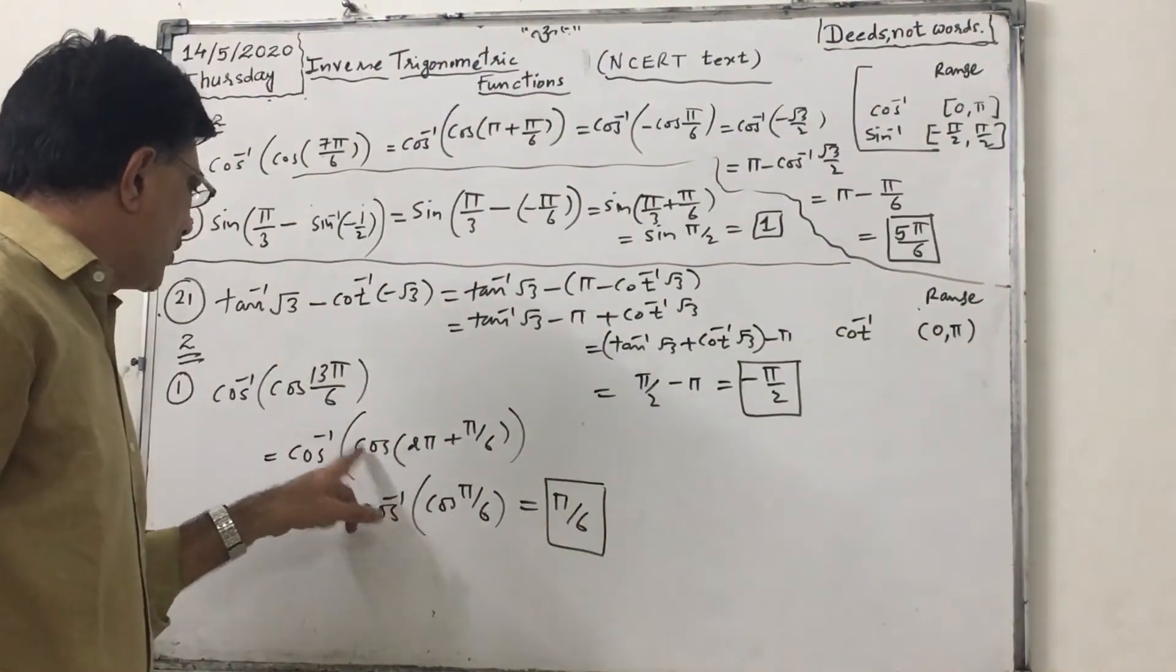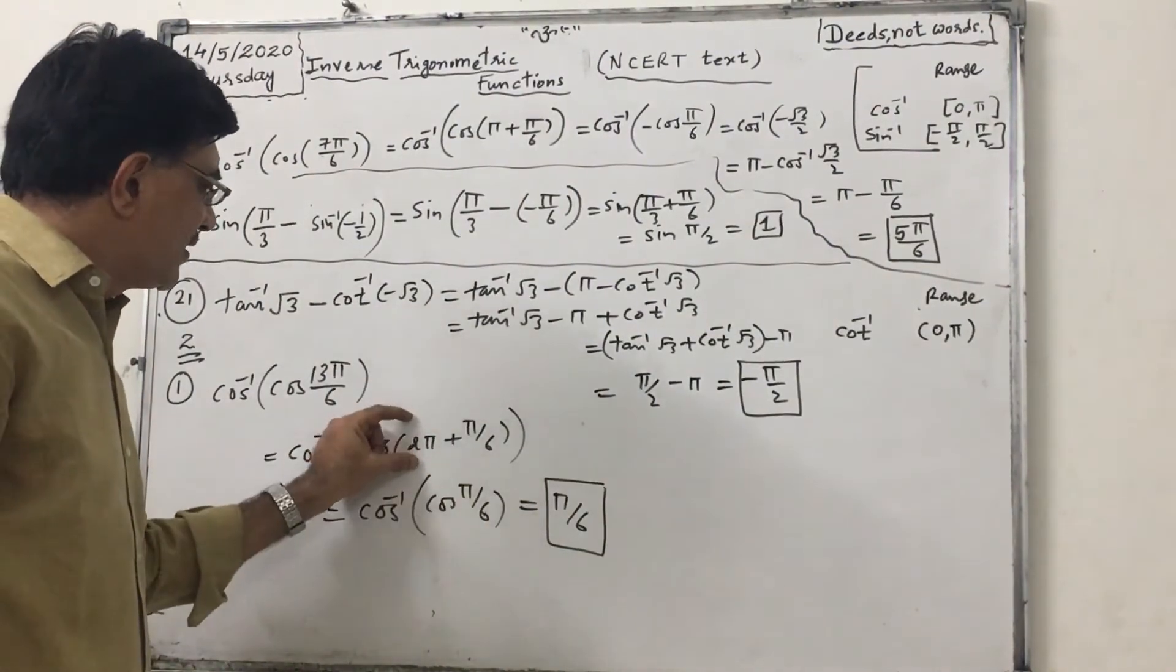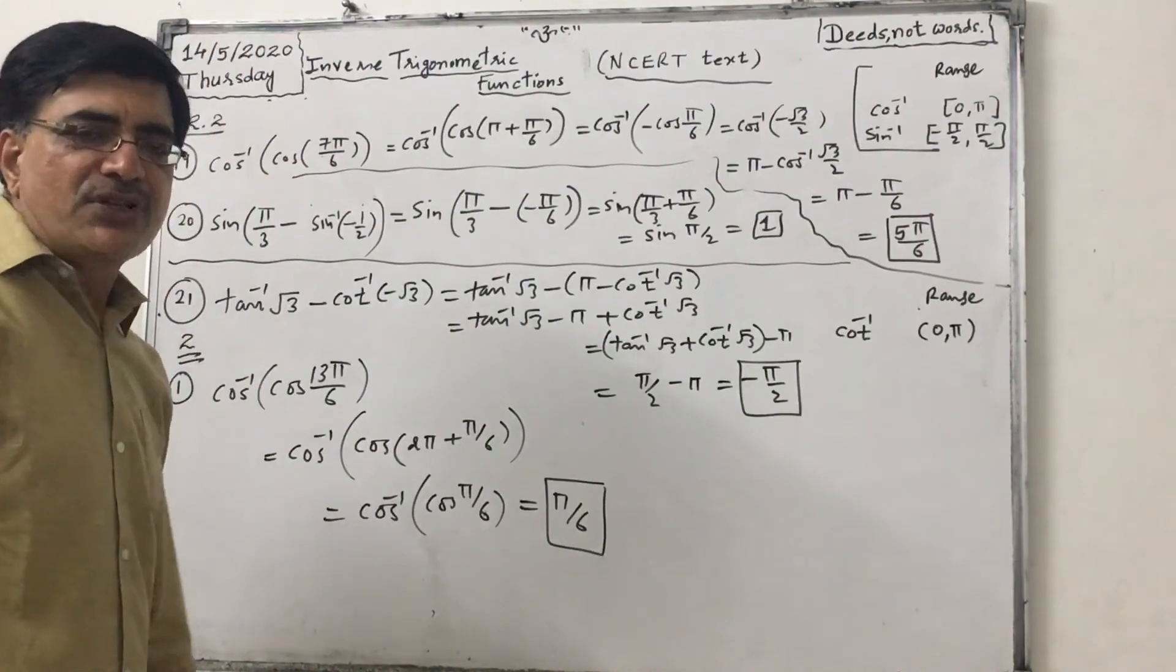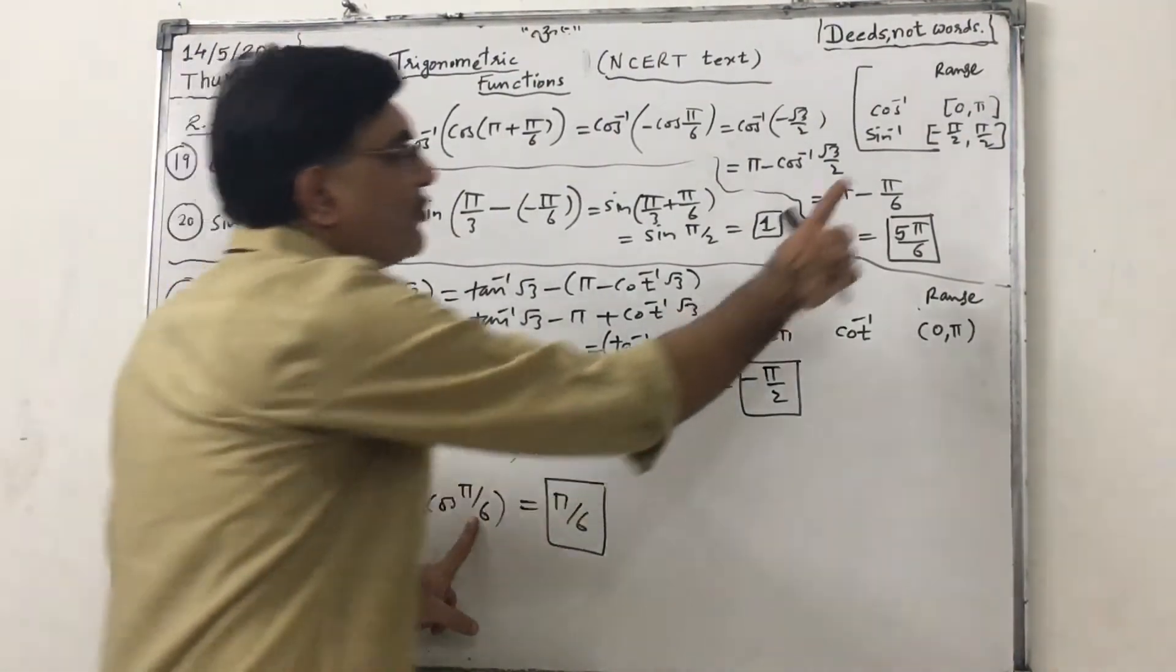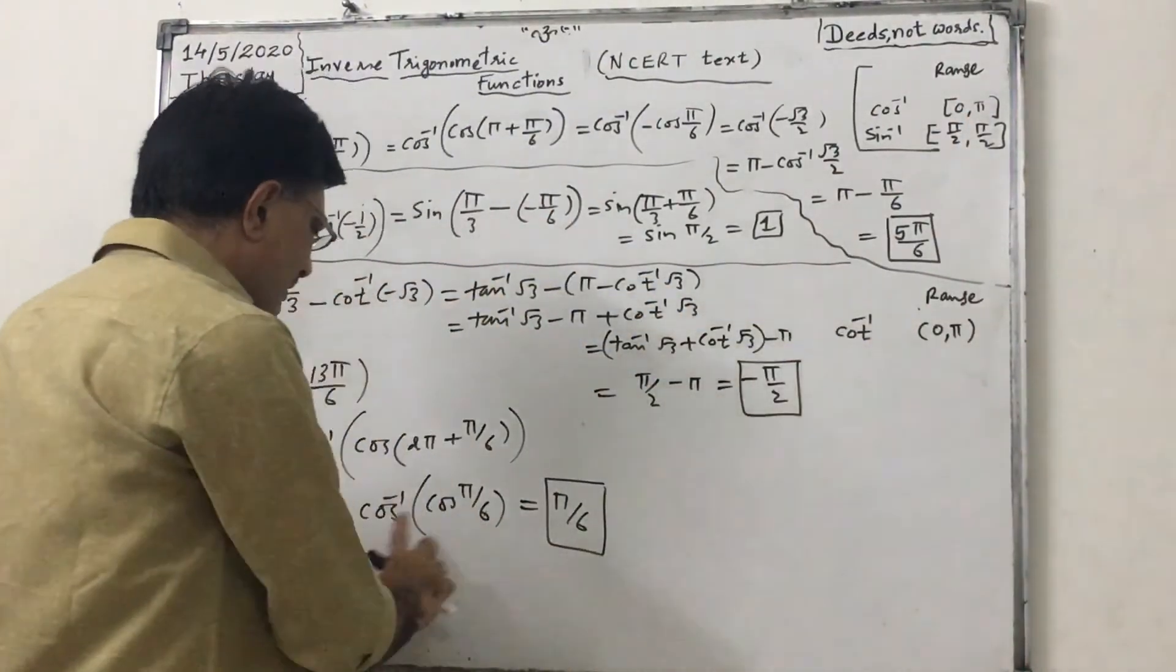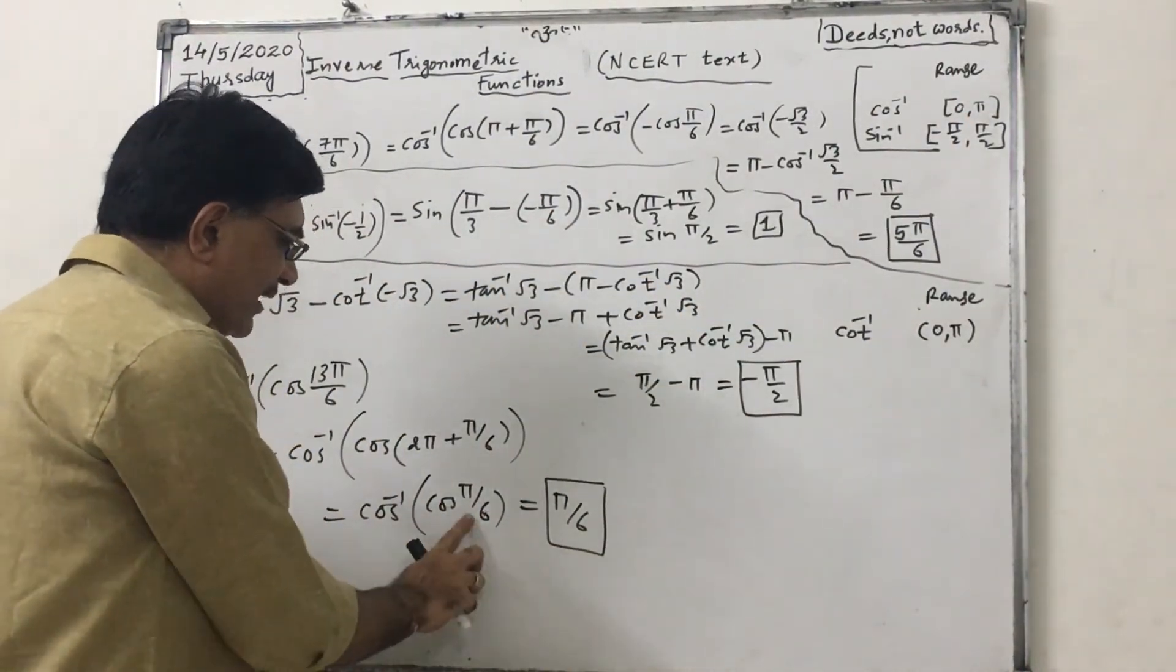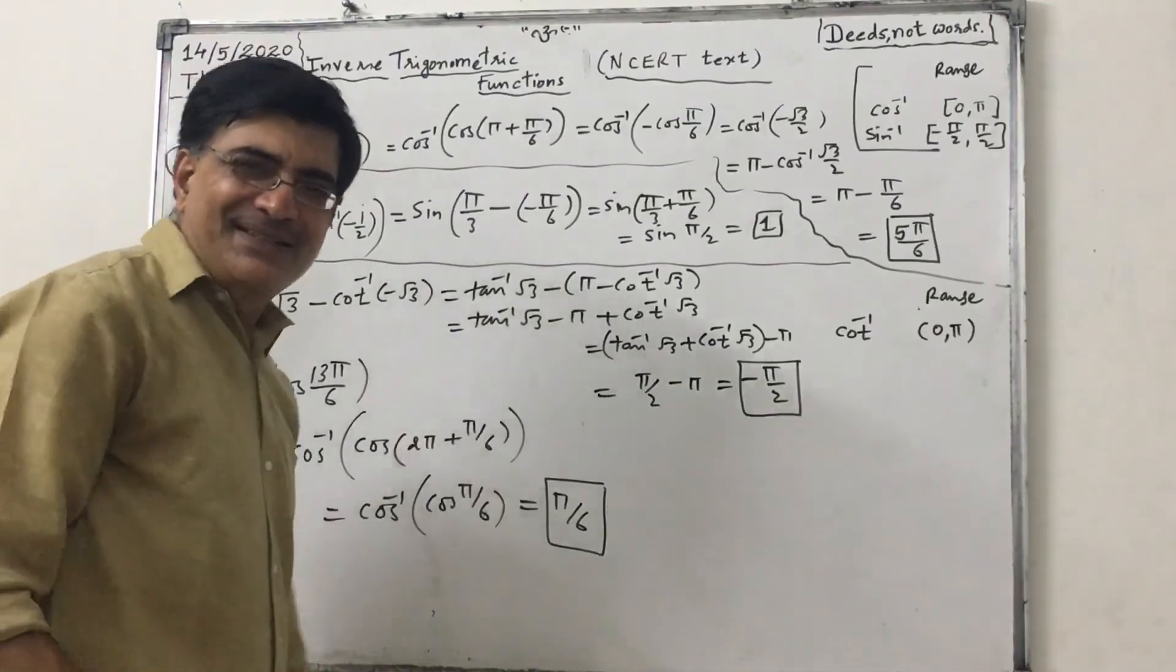So we should write cos of 2π plus π by 6. But this is first quadrant, and in first quadrant cos is positive. So it is cos π by 6. But π by 6 is in range of cos inverse, so this will give us identity function. And this is the answer: π by 6. Bye.